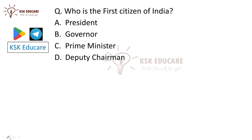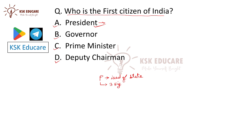The next question is: Who is the first citizen of India? The options are President, Governor, Prime Minister, and Deputy Chairman. The correct answer is President — he is the first citizen of India. The President is also the head of state, with a minimum age of 35 years. The Prime Minister is the head of government.